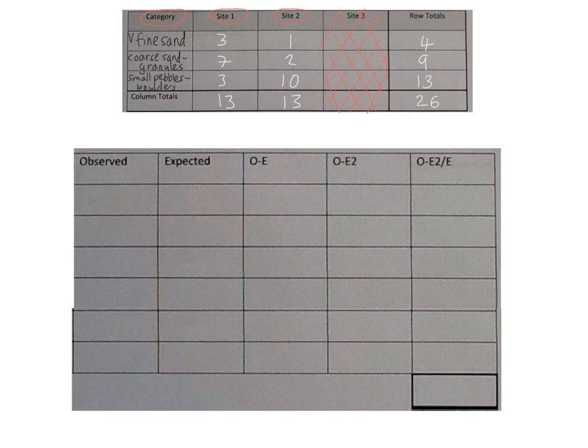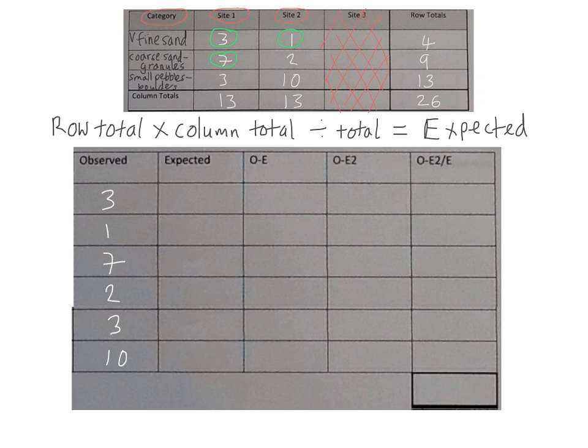So the next stage is to input the information from the top table that we've just completed into this main table below so that we can calculate our theoretical random distribution which is known as the expected value. The first thing we do is we simply insert our observed data into the first column. The next step is to complete the expected column. And to do this we need to do a simple calculation of row total times column total divided by total gives us expected. And this is how we do it.